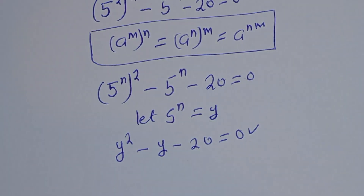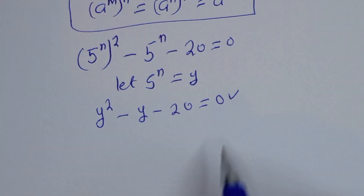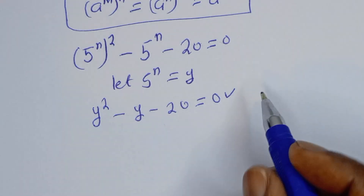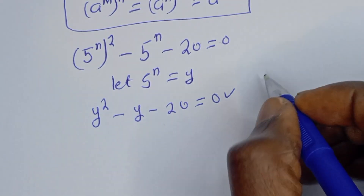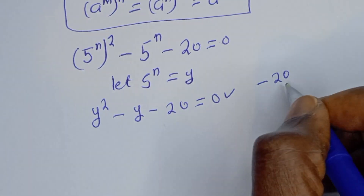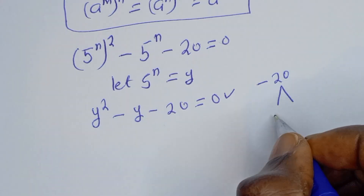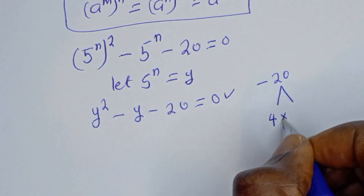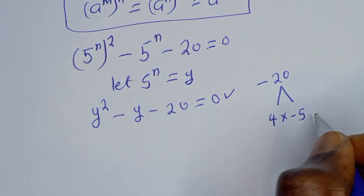This is a quadratic equation which can be solved using either the factorization method or the quadratic formula. Let's use the factorization method. Minus 20 is equal to 4 multiplied by minus 5.